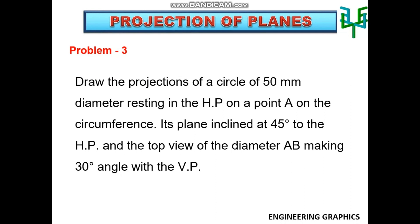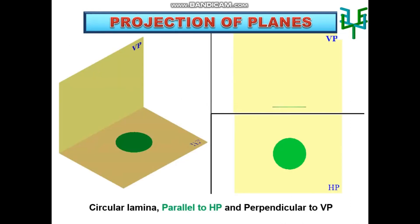Initially the circular plane is made to lie on the ground so that the plane is parallel to HP and perpendicular to VP.